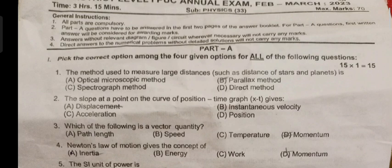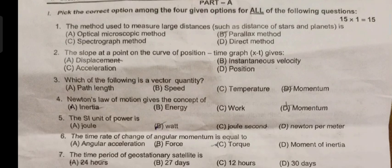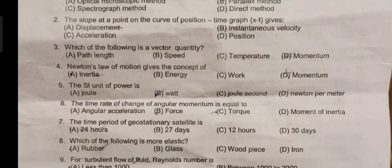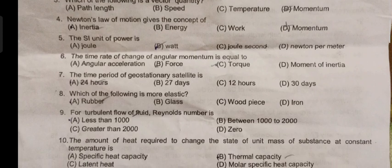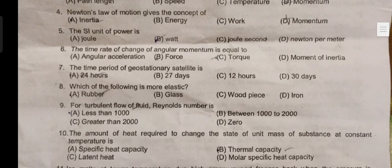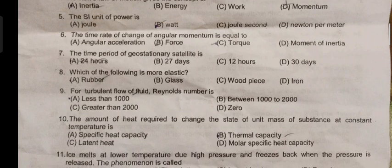or Direct Method. The slope or tangent point on the curve of a position-time graph (x-t) gives velocity. Which of the following is a vector quantity? Newton's law of motion gives the concept of force. The unit of power is Watt.